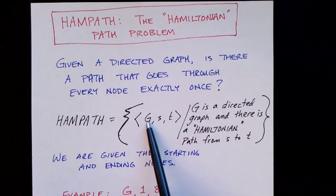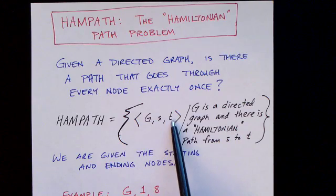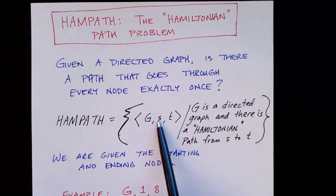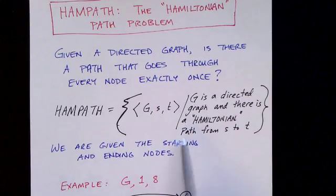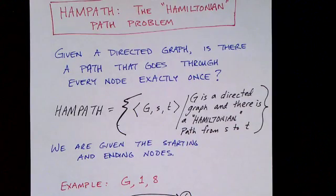Again, we have a directed graph with a starting node and an ending node. The question is not whether there's a path from S to T, but whether there's a path going through all nodes exactly once from S to T. So next I have an example graph.